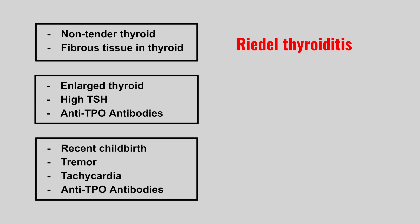The next patient has an enlarged thyroid, high TSH levels, and anti-TPO antibodies. This is Hashimoto thyroiditis, which is an autoimmune cause of hypothyroidism.